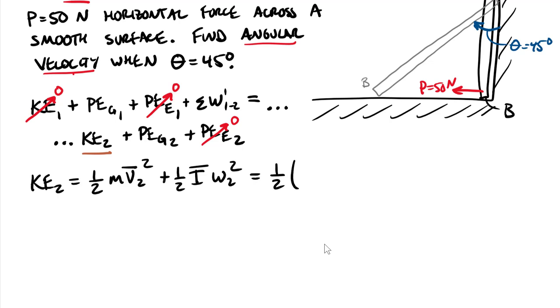Putting in values we know, we have constant 1/2, our mass is 10 kilograms, velocity is still unknown v bar 2 squared. We add the rotational kinetic energy 1/2. My mass moment of inertia about the centroid of a slender rod is 1/12th the mass of 10 times the length squared, 0.8 squared, times omega 2 squared.